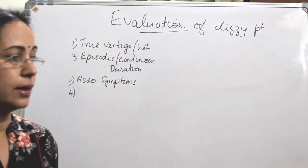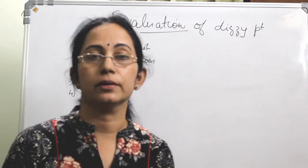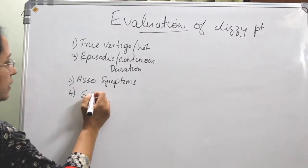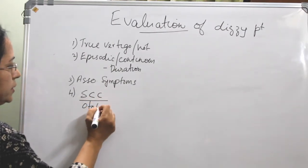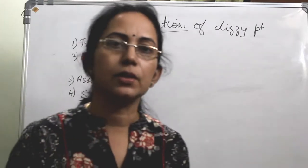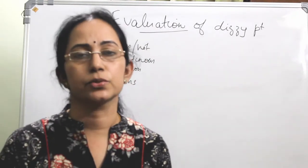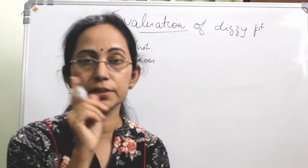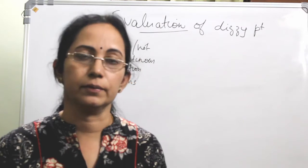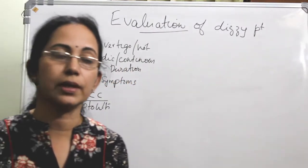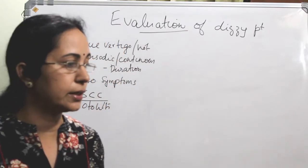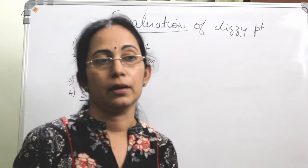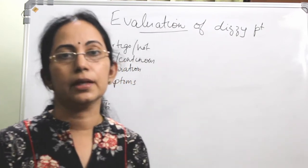The fourth question is: do the patient's symptoms reflect a disorder from the semicircular canal or from the otolith organ? If it is from the semicircular canal, the patient will be having nystagmus — they will tell that things are moving, or there is a sudden jerk of vision. If the patient is telling you that they are having an abnormal sensation of sudden drop attack or tilt, or there will be sudden drop attacks, then it is due to the otolith organs.